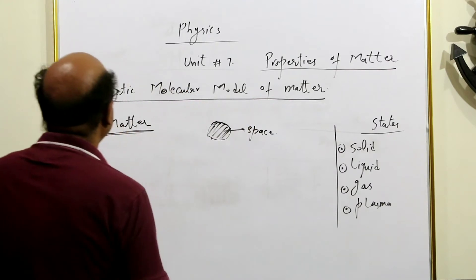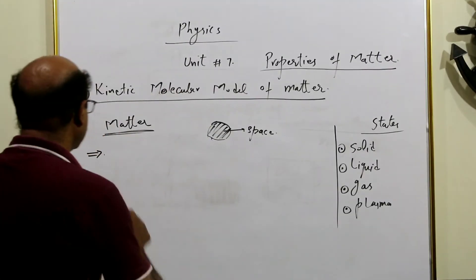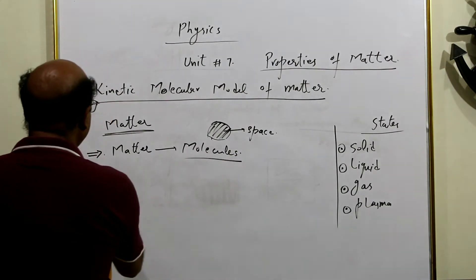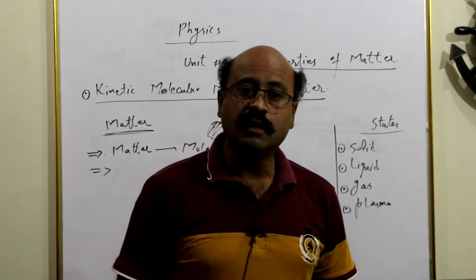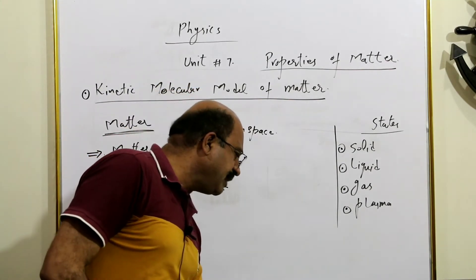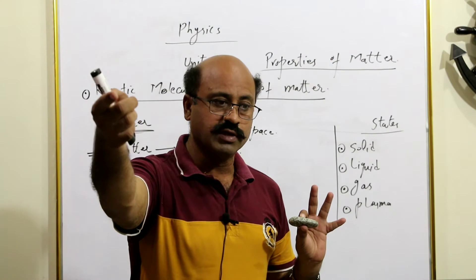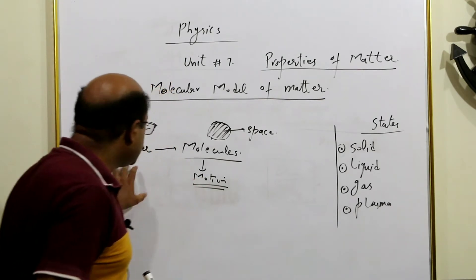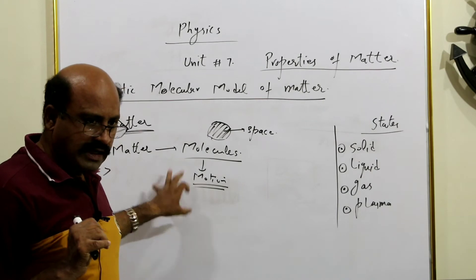Kinetic molecular model of matter: matter is made up of molecules. The molecules are always in motion. If you use a solid structure, it will have restricted movement — one can move but in a limited way. If matter is made up of molecules, then the molecules will always be in motion.